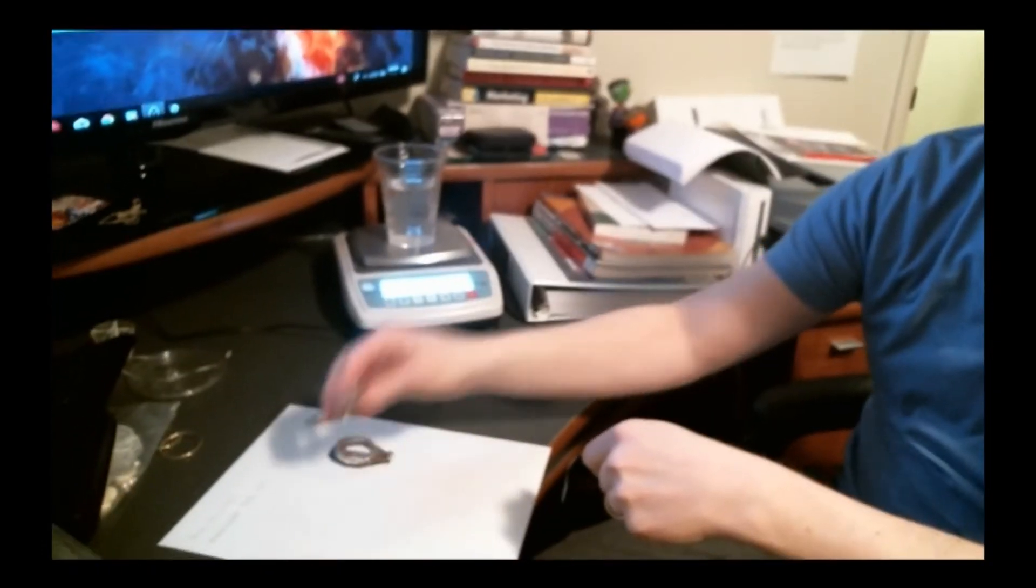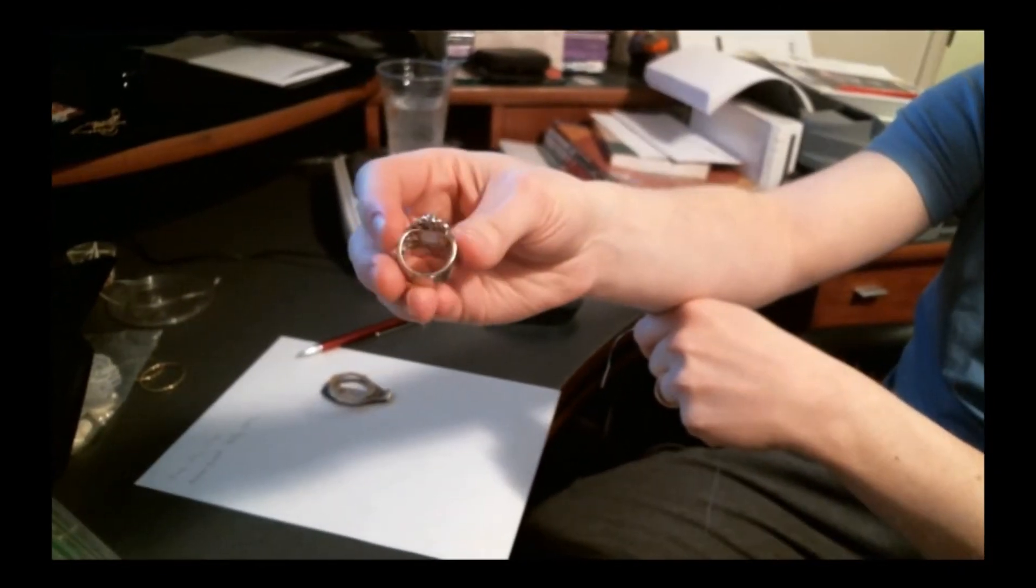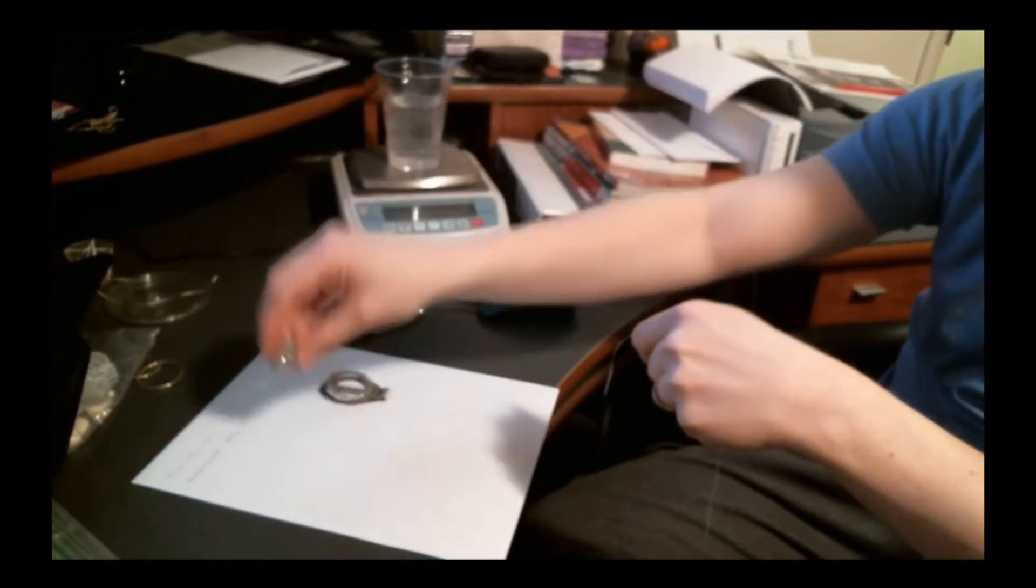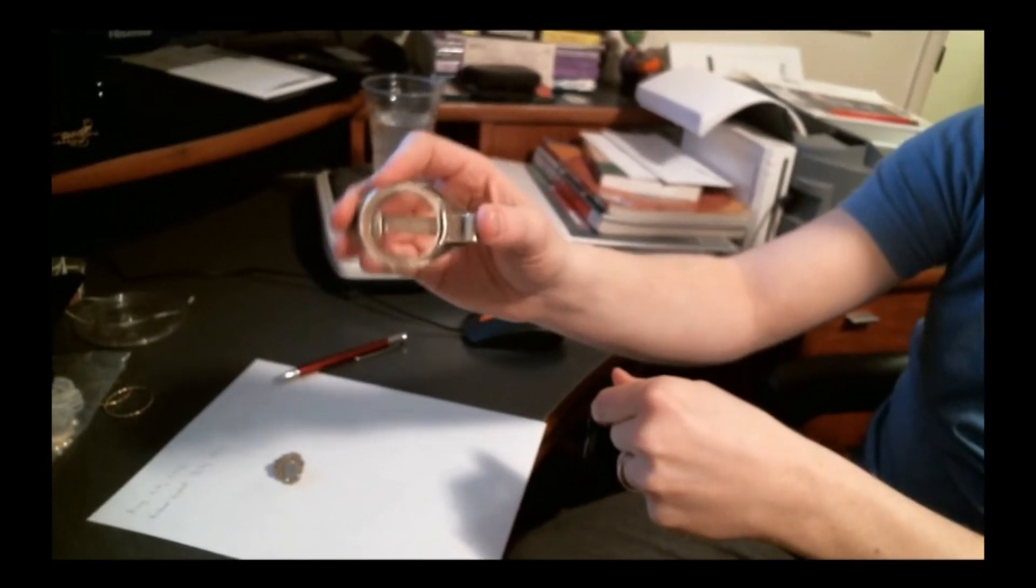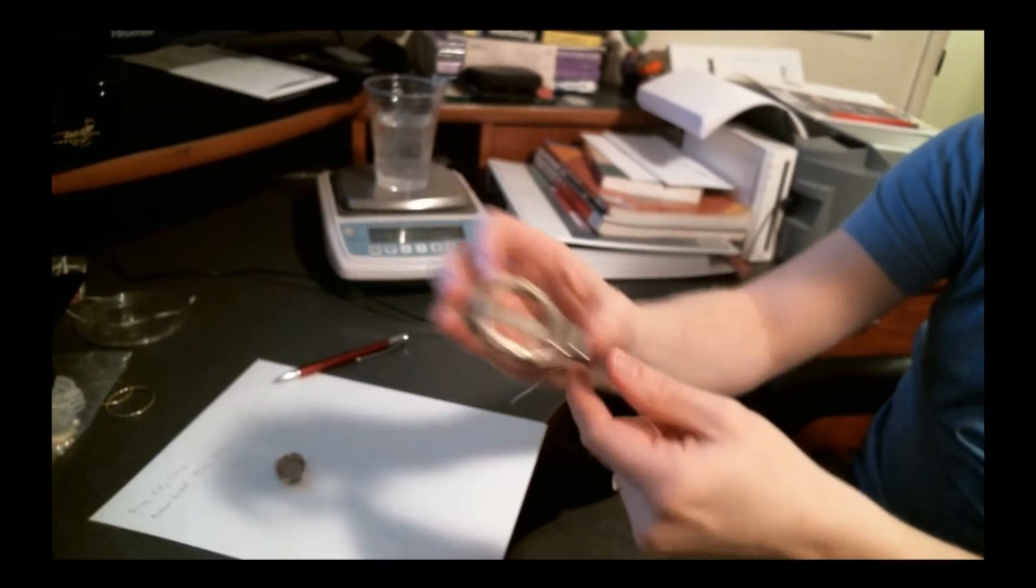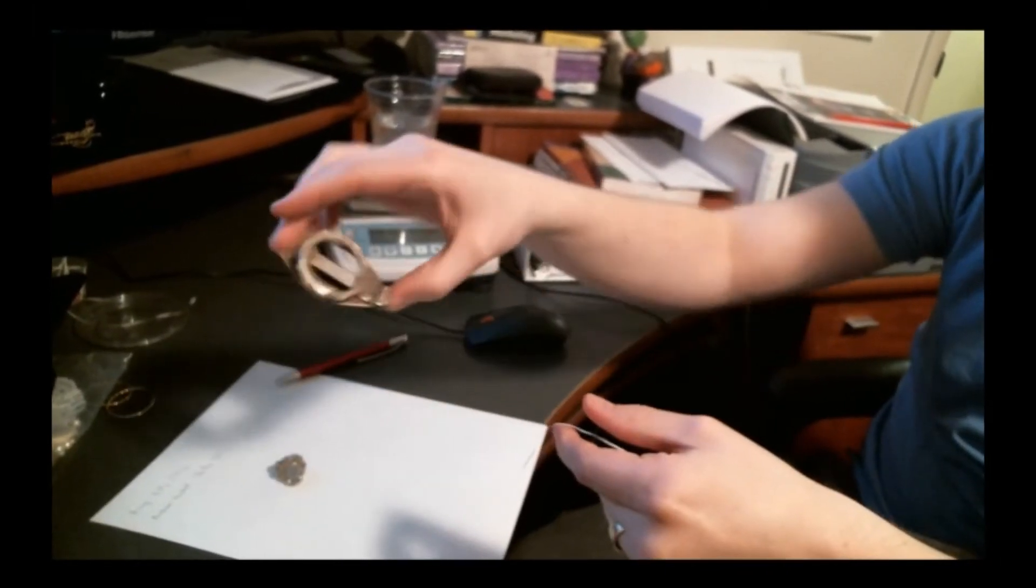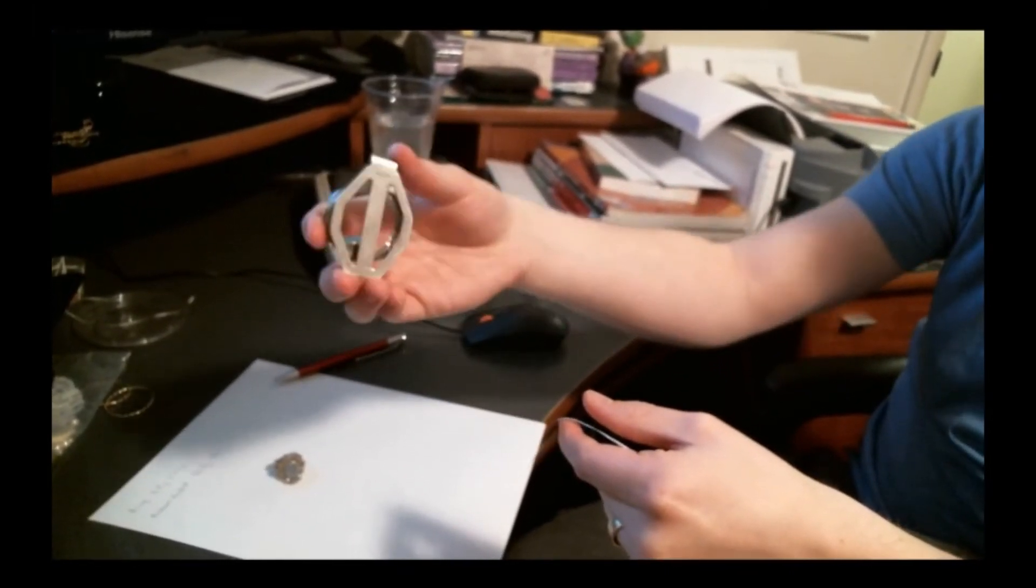Now I have here two specimens. I've got this sterling ring, it's marked 925 on the inside, and then we've got this basically piece of scrap broken belt buckle that used to have maybe a silver dollar in it or something. It's also marked sterling.